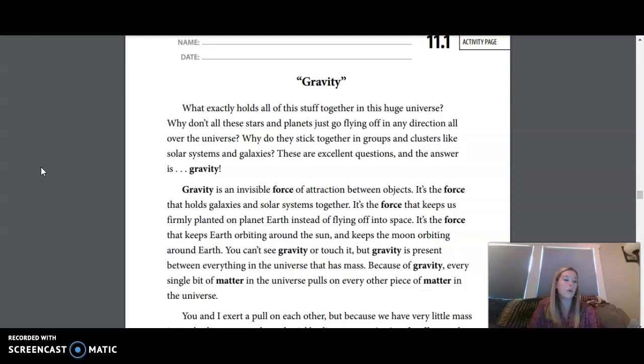Our next term is black hole, an object or area in space that has such strong gravity that not even light can escape from it. Our next word is tides, the periodic or regular rise and fall of the surface of large bodies of water on Earth that are caused by the interaction of the moon's gravity with Earth.